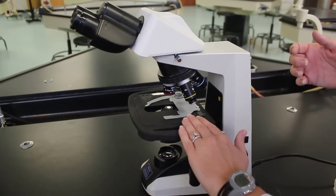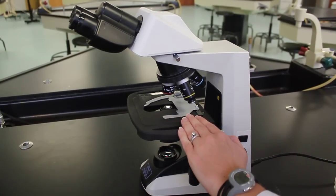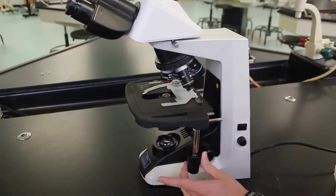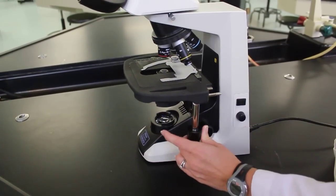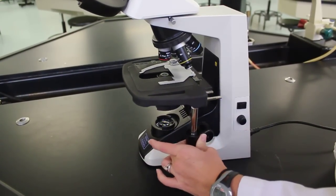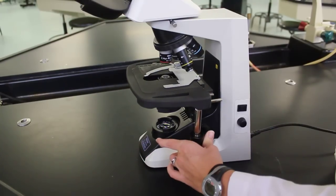This area is the stage. This is where the microscope slide is placed. These knobs allow you to move the stage to get your microscope slide in the proper orientation.